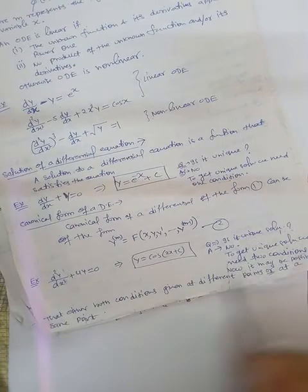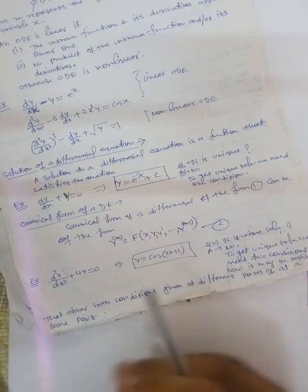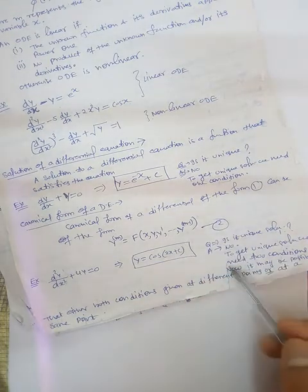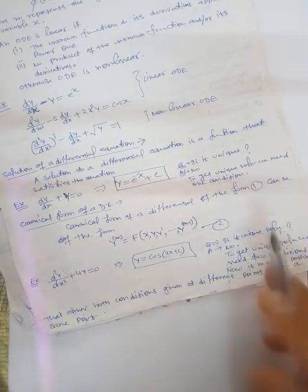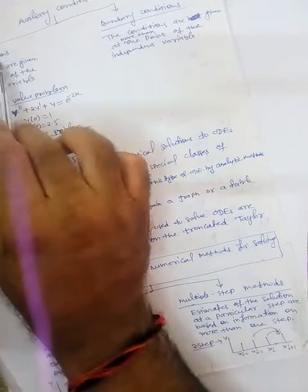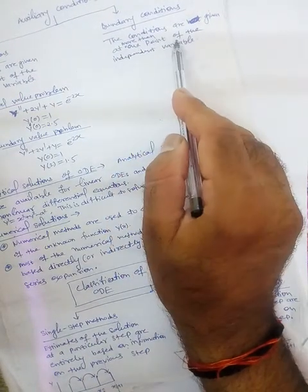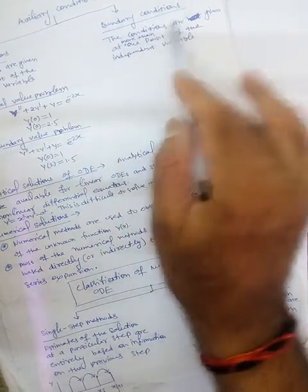These conditions may be given at a single point or at two different points of the independent variable. If both conditions are given at one point of the independent variable, the equation is an initial value problem. If the conditions are given at more than one point, this is called a boundary value problem.